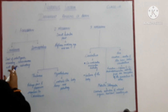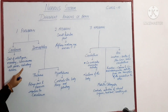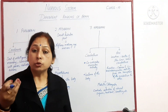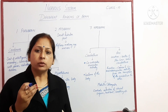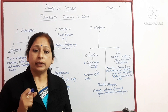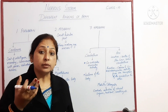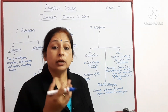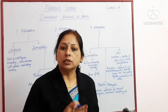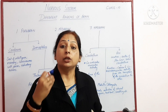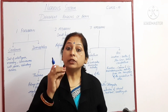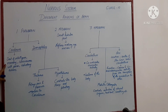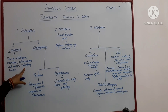Cerebrum is the seat of intelligence, memory, consciousness, willpower, and voluntary actions. Whatever comes to your mind — when we say 'use your brain' or 'use your mind' — all those terms refer to the cerebrum. Memory power, consciousness, willpower, all the voluntary actions and movements we perform are related to the cerebrum of the brain.